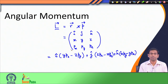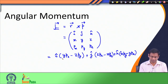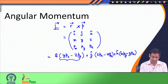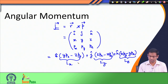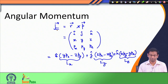This is what we get in vector notation for the angular momentum. The component along i-cap is called Lx, the component along j-cap is called Ly, and the component along k-cap is called Lz. So these are the x, y, and z components of the angular momentum vector. This is how we define angular momentum in classical mechanics.